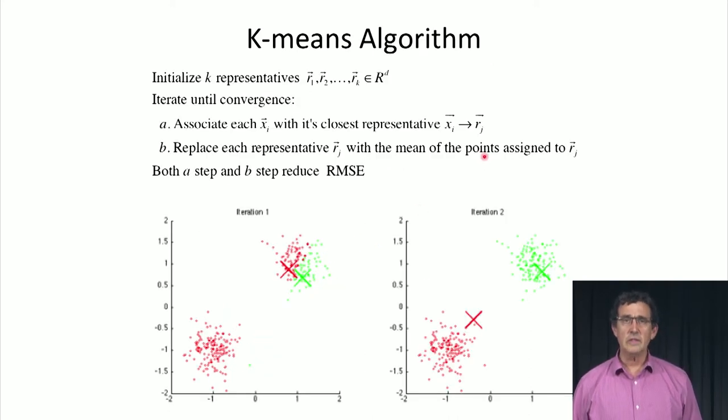That brings us to the K-means algorithm, which is an attempt - not fully successful, but an attempt - to minimize the RMSE for a given number of centroids. K is the number of centroids.